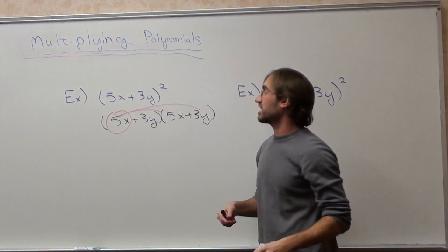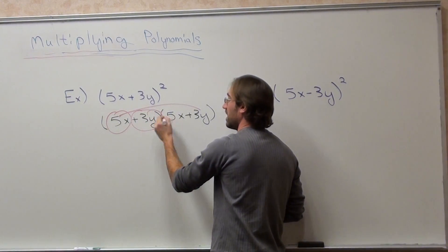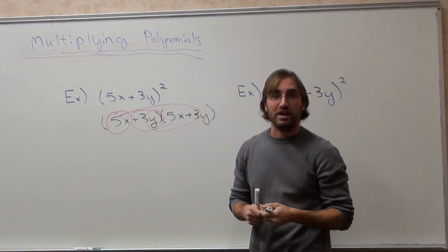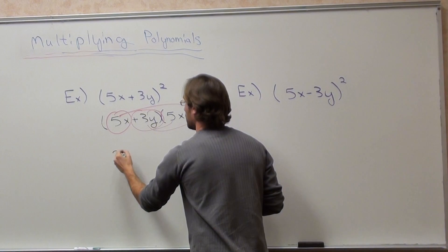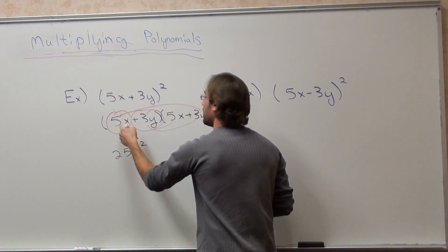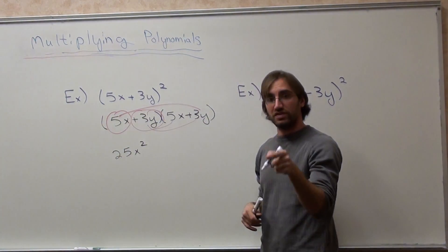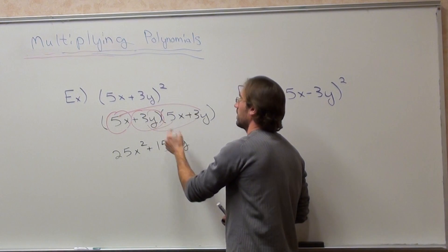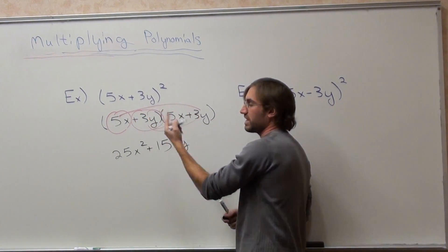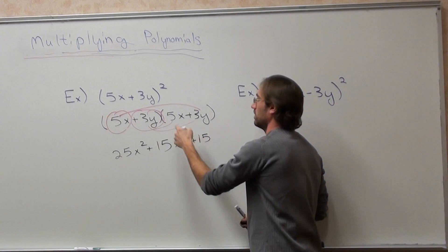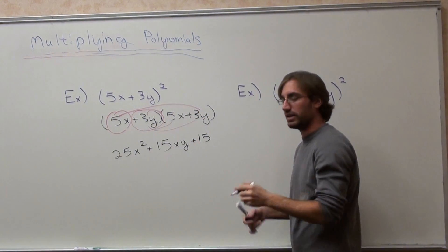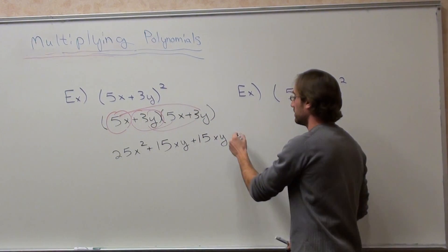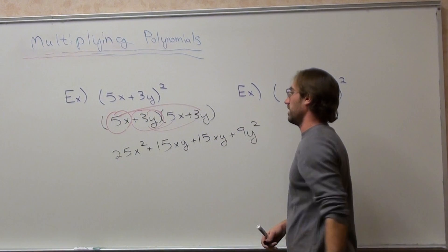Take the 5x times the 5x, 5x times the 3y, and then the 3y times the 5x, 3y times the 3y. So 5 times 5 is 25, and x times x is x squared. 5x times 3y, 5 times 3 is 15, and I have xy left over. 5 times 3, or 3 times 5 is 15, with an xy left over. And I want to write them alphabetically. And then 3y times 3y, 3 times 3 is 9y squared.